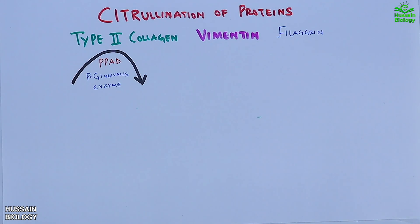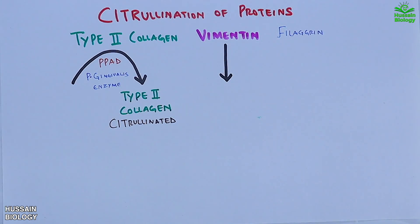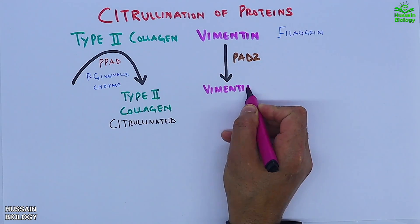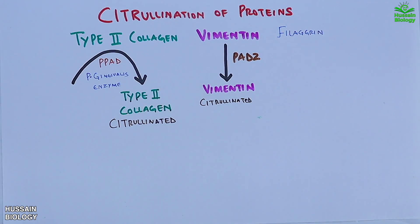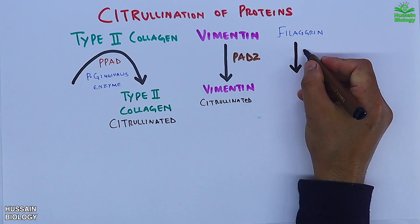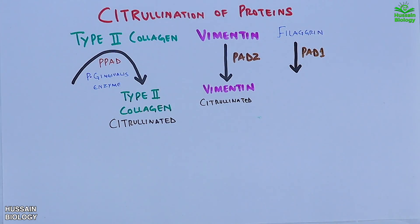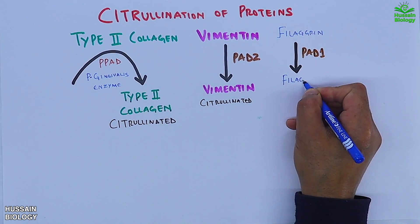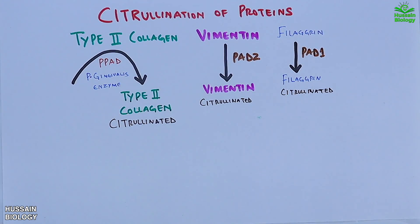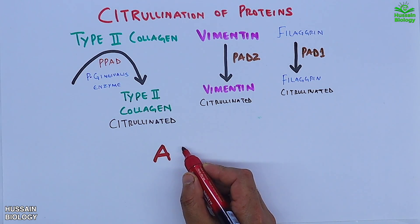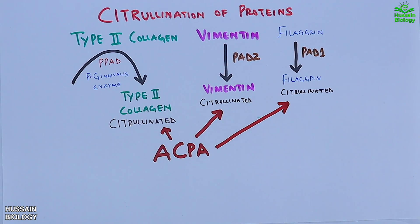In type 2 collagen, the PPAD enzyme from Porphyromonas gingivalis drives citrullination of collagen, producing modified type 2 collagen. Vimentin is acted upon by the PAD2 enzyme and gets citrullinated, and filaggrin is acted upon by the PAD3 enzyme and gets citrullinated. These citrullinated proteins are modified proteins, and ACPA — generated by the risk factors — targets these citrullinated proteins and launches an immune attack.